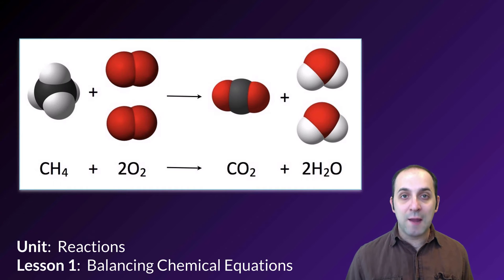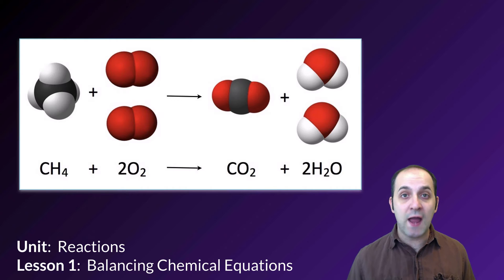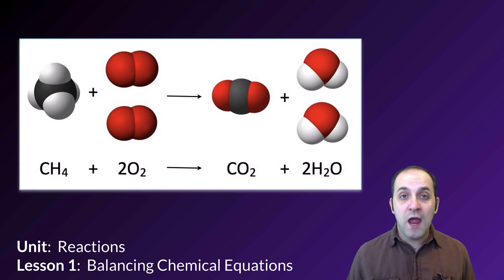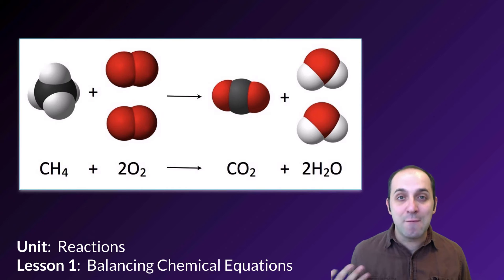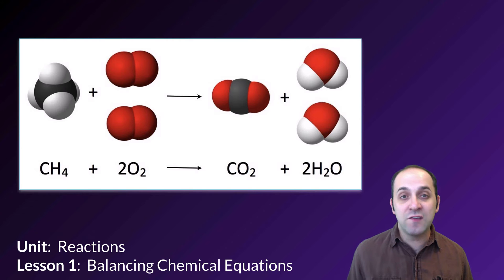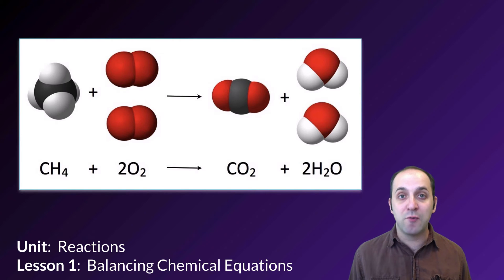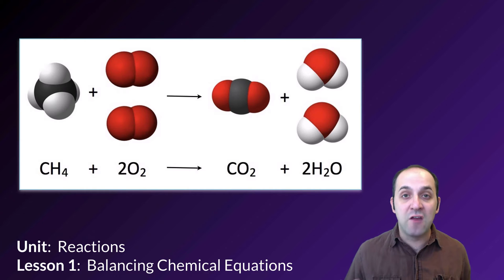Lesson one is all about balancing chemical equations. At the top we have a diagram of a chemical reaction — a reaction between methane (CH₄) and oxygen gas — which produces carbon dioxide and water. You can see it represented as a space-filling diagram of each of those molecules, and you can also see the chemical equation written below it. This is a very common way of representing what happens in chemistry.